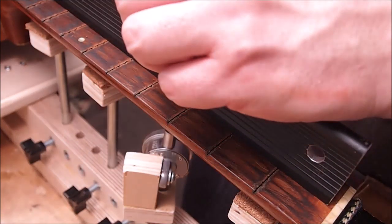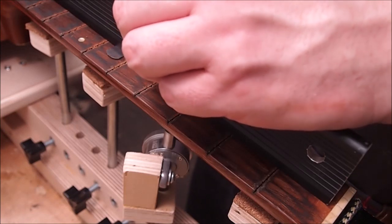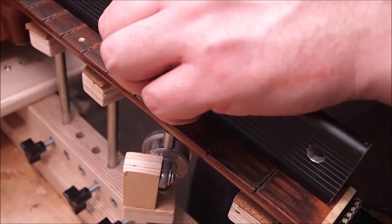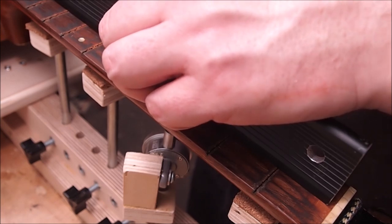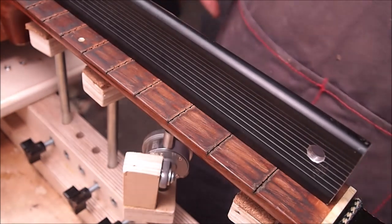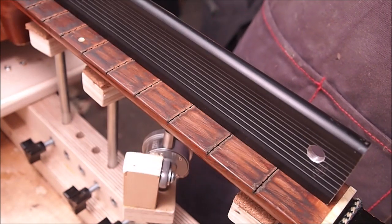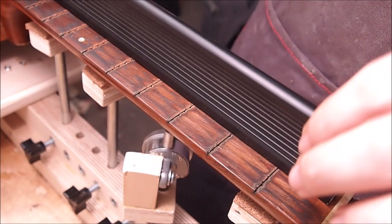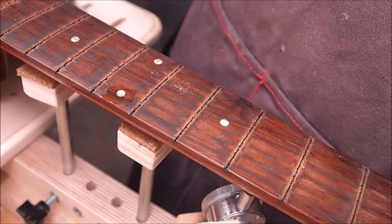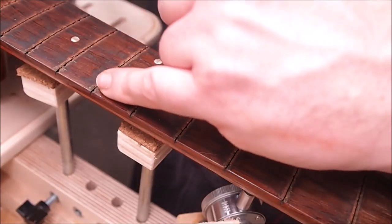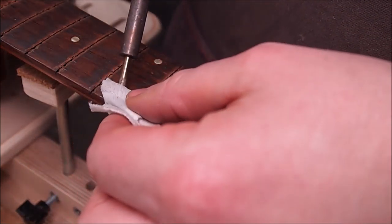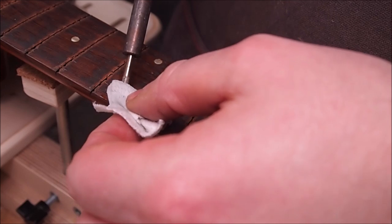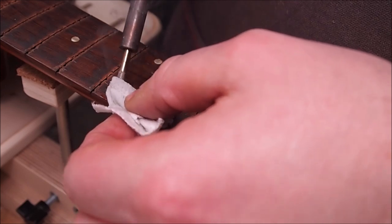With the frets removed and a straight edge on the board here, I'm just going to check the amount of relief in the neck and it is around 20 thousandths in the center. So that's more than twice what it should be. I'd like to bring it down to about six, seven, eight, somewhere in there. The other thing is, because I'm going to be flattening the board, removing a lot of material, I want to remove these outside dot markers here.